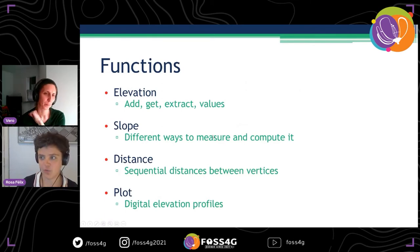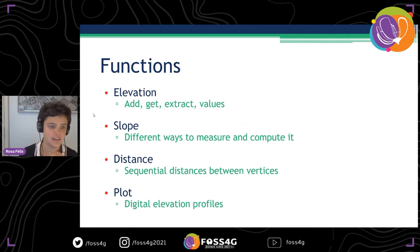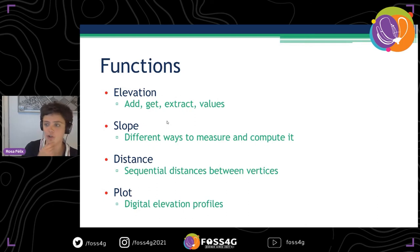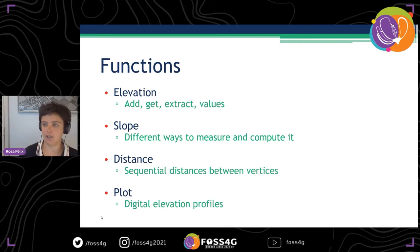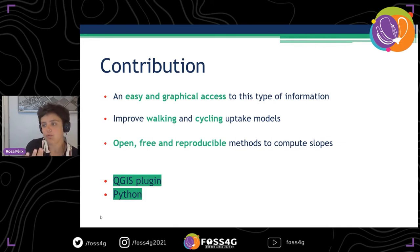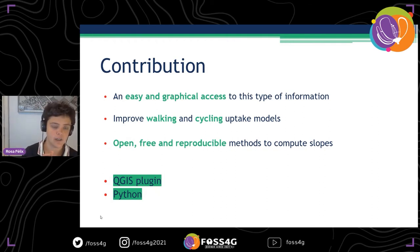Let me wrap this up quickly. There are four main function groups: the elevation functions, where you can add, get, or extract elevation values; the slope calculation, with different ways to measure and compute slope; the distance functions for sequential distance between vertices; and the plot function to display digital elevation profiles. The contribution of this package is easy and graphical access to gradient and slope information, and to improve walking and cycling uptake models — though it can be used for many other real-world applications. It provides open, free, and reproducible methods to compute slopes.